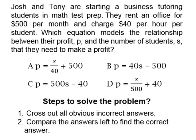We have A, where P which is the profit is equal to the number of students divided by 40 plus $500. B is P the profit is equal to 40S — S stands for student — minus $500. C is P is equal to 500S minus 40, and D is P is equal to the number of students divided by 500S.